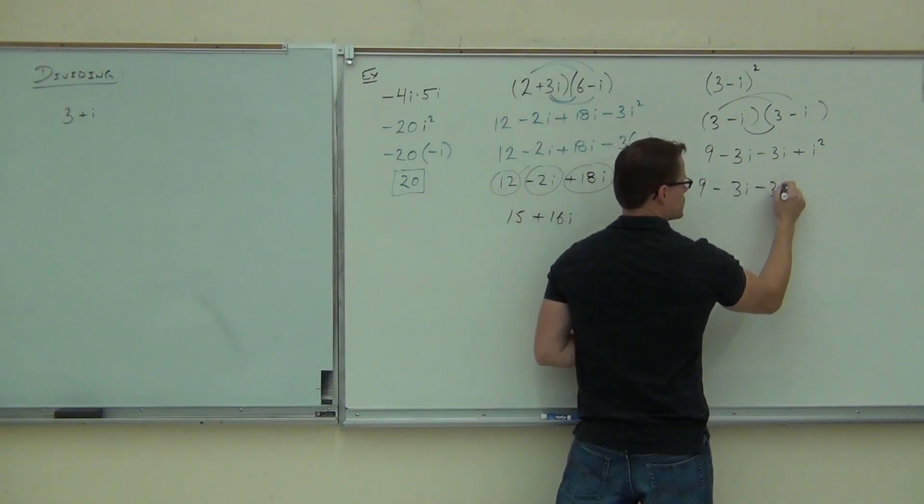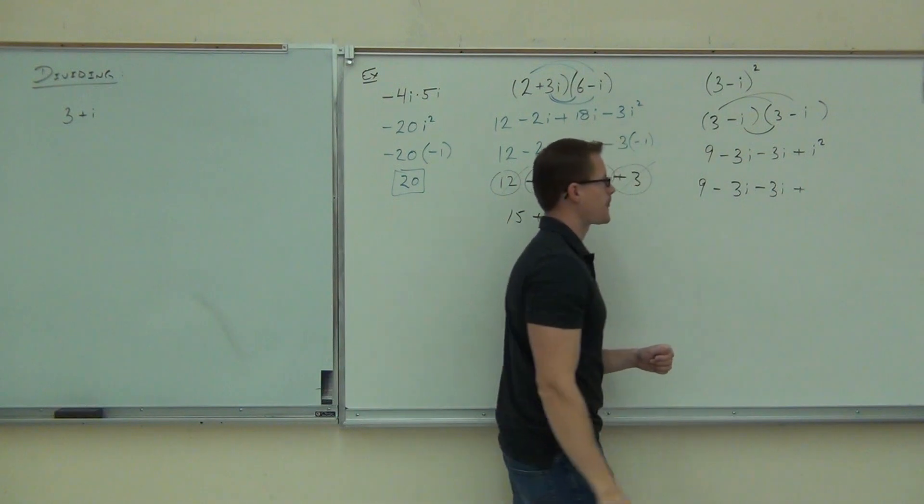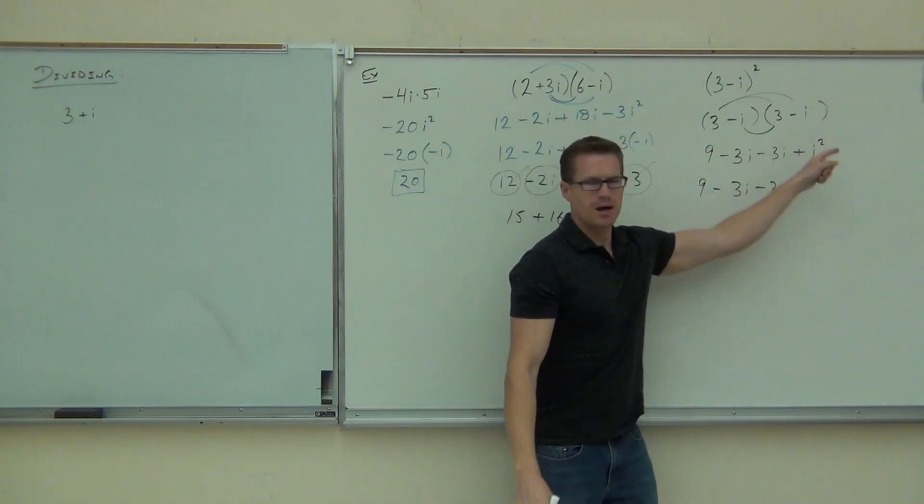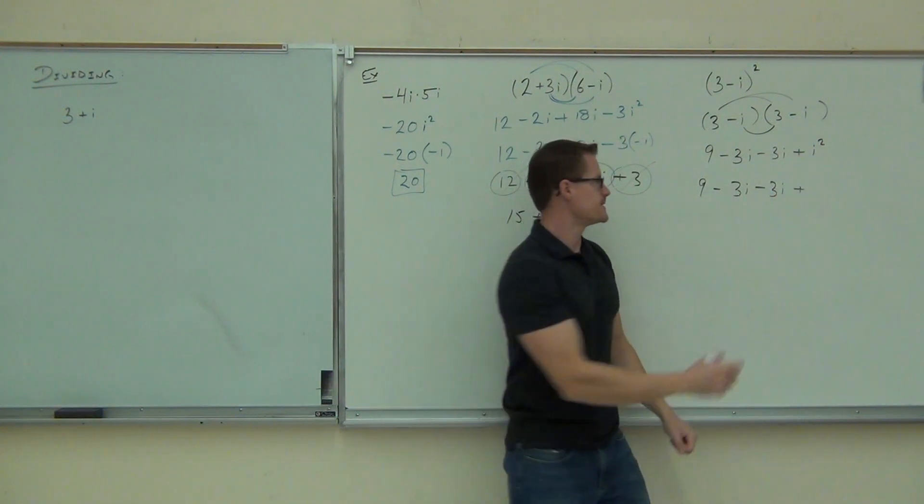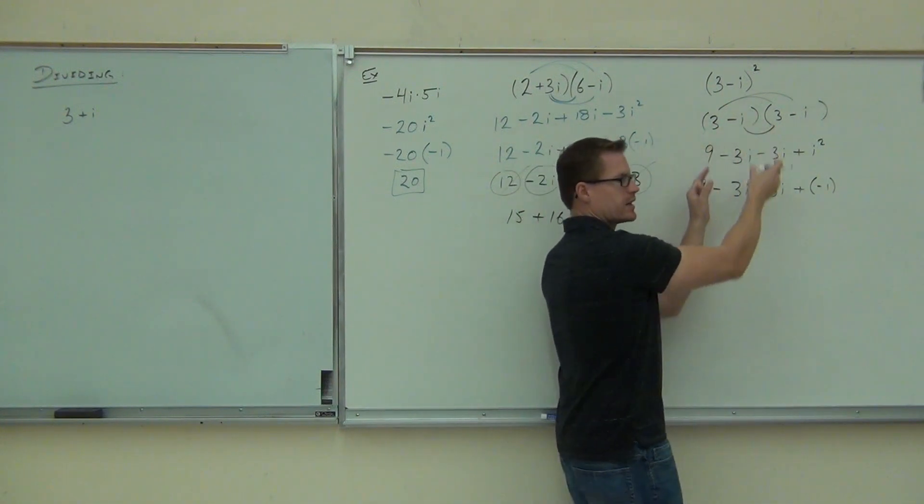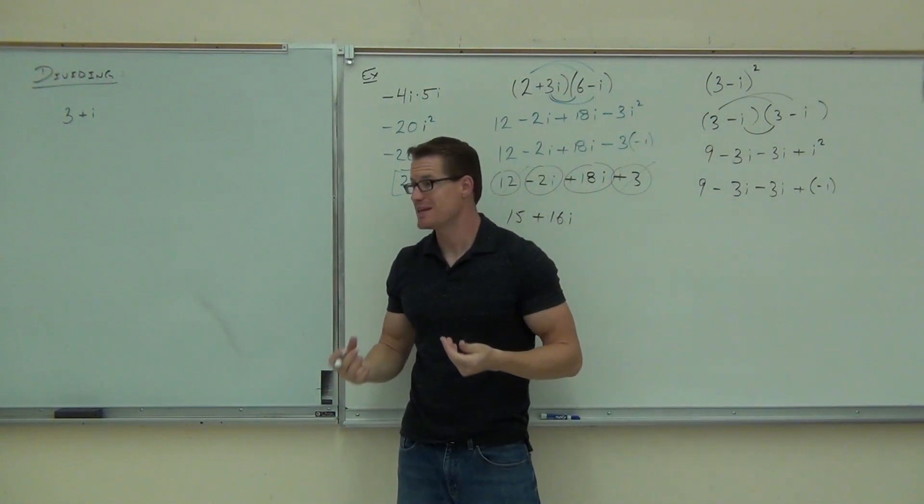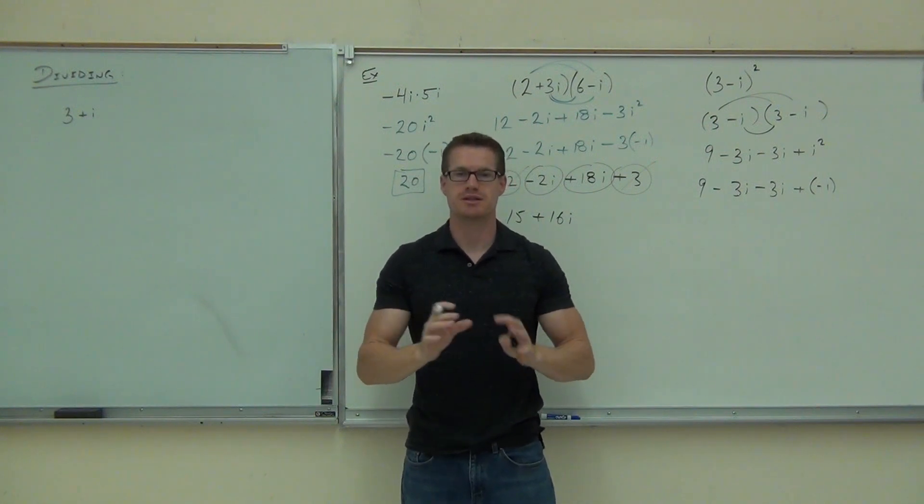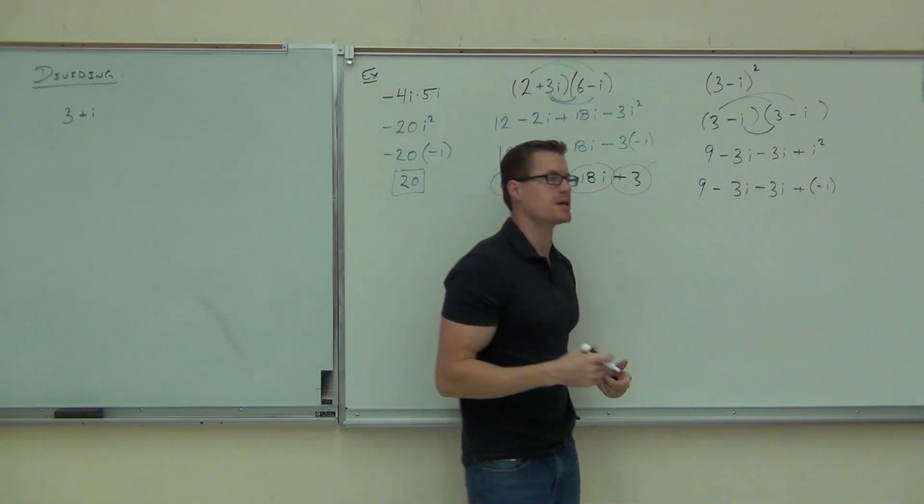Well, we know we definitely have to change any i squareds that we see. So what this does, how much is that? Negative 1. Yeah. So really what that means, I know I'm writing lots of steps, but that's kind of one of the keys here. The math isn't hard, you just have lots of negatives. Because of those i squareds, that means negative 1.